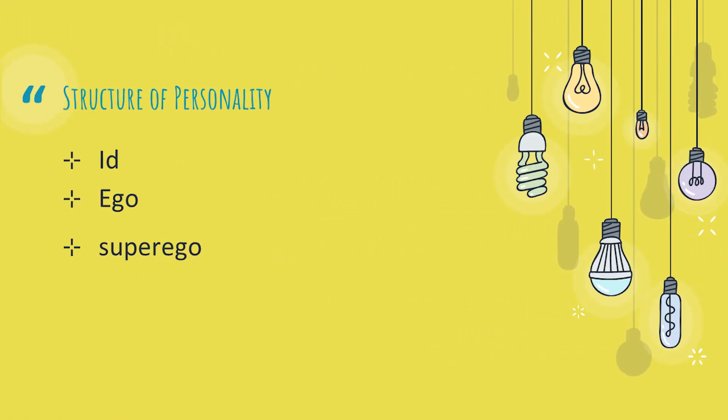Id is basically based on the pleasure principle, which demands immediate gratification of urges. It also engages in primary process thinking, which is illogical, irrational, and fantasy oriented.